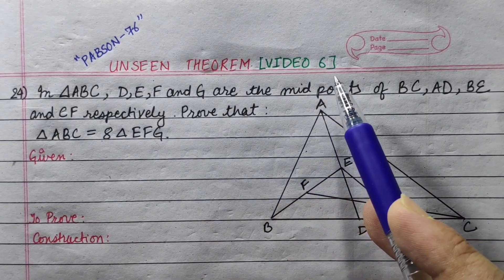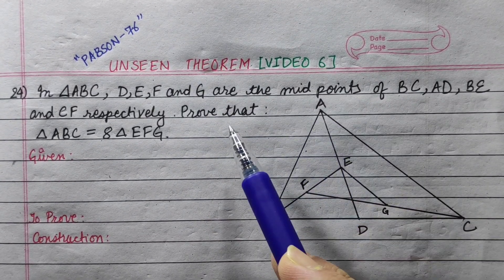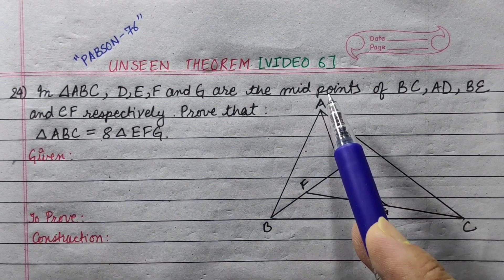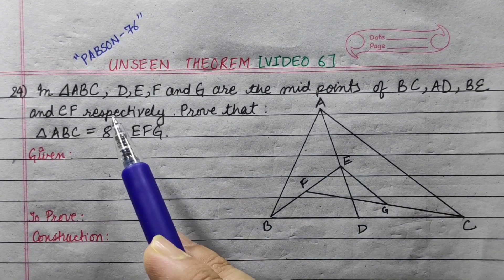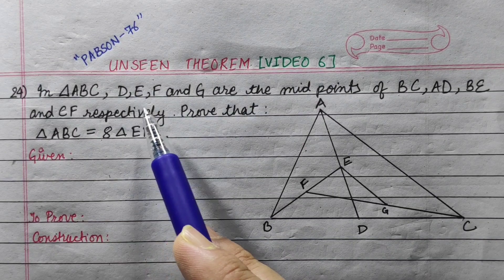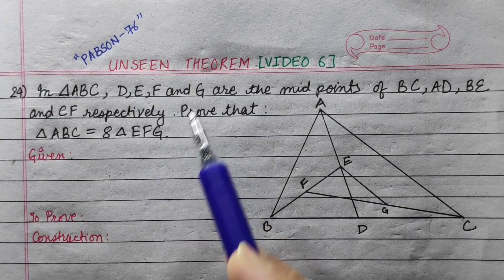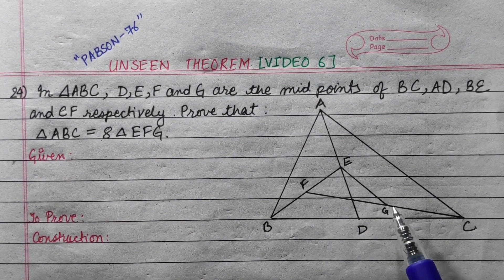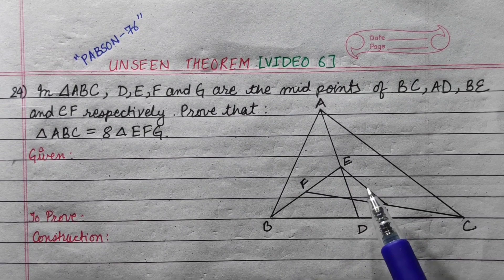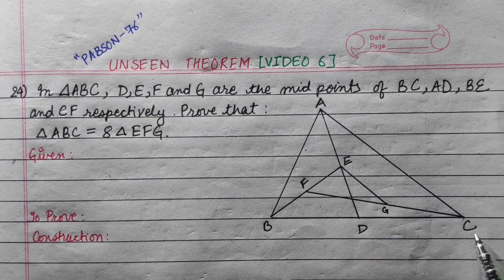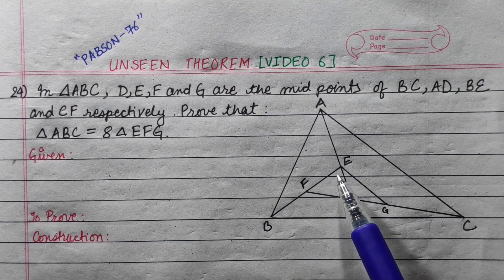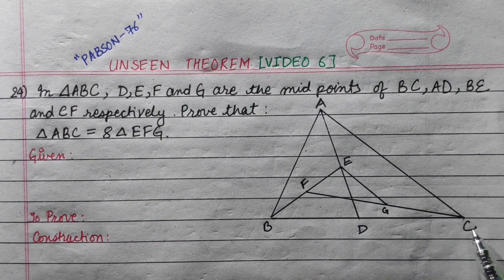Question. In triangle ABC, D, E, F and G are midpoints of BC, AD, BE and CF.